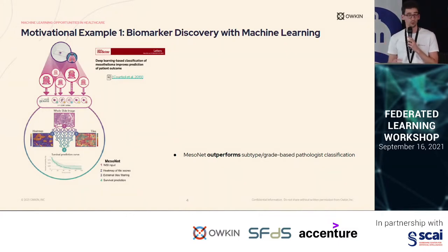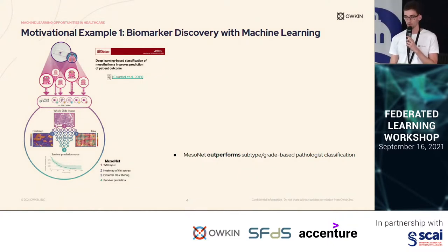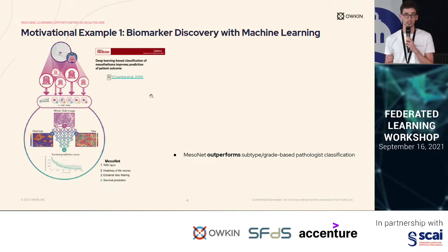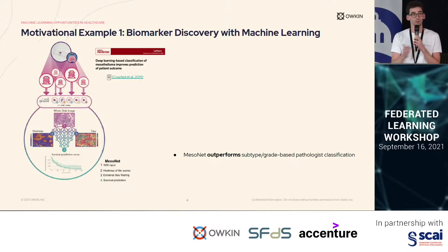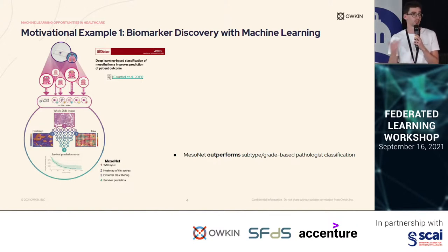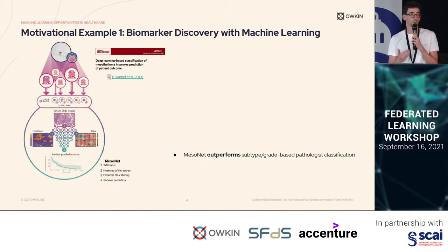The first good result is that this machine learning model was able to outperform the subtype and grade classification of the pathologist in its ability to separate patients among different risk scores. This is already great in terms of machine learning, but this is not where the story ends in terms of medicine.